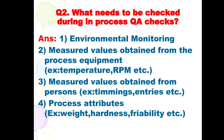Next is: what needs to be checked during in-process QA checks? The answer is: number one, environmental monitoring; number two, measured values obtained from the process equipment, like temperature, RPM, etc.; number three, measured values obtained from persons, like timing, entries, etc.; and number four, process attributes, like weight, hardness, friability, etc.